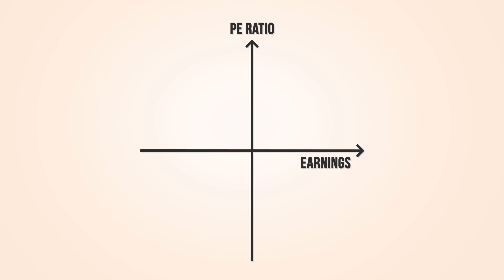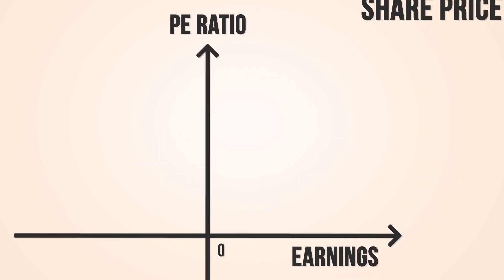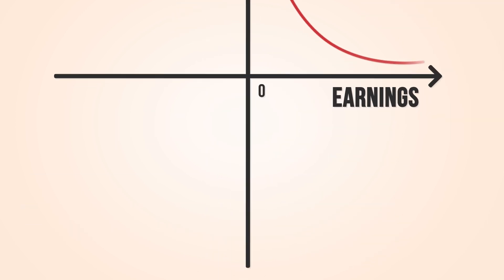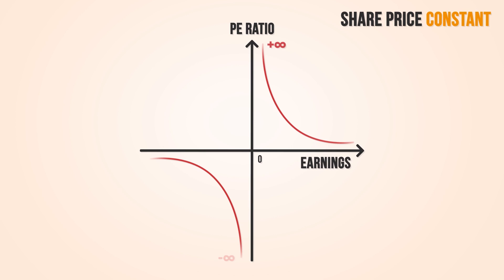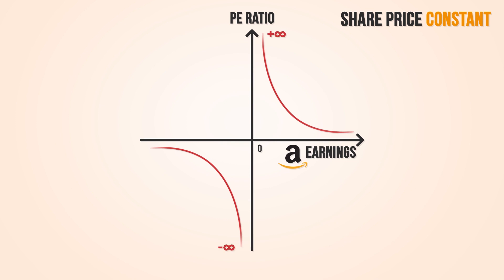To understand this confusion better, let's inspect the relationship between earnings and PE ratio. We plot earnings per share on the x-axis, PE ratio on the y-axis, and hold the share price constant. When we look at the positive side of earnings per share, as we move further towards zero, the PE increases and goes to positive infinity. On the negative side, as we move further towards zero, the PE ratio decreases and goes to negative infinity. For example, Amazon's earnings per share have been pretty stable around zero, but this steadiness is not reflected by the PE ratio. In fact, PE jumps between large negative and large positive values when neither earnings nor prices change much. If you had excluded Amazon only due to its erratic behaving PE ratio, you would have missed out greatly.